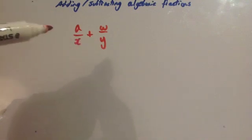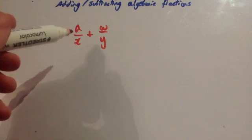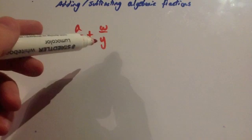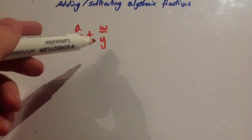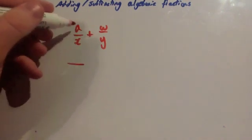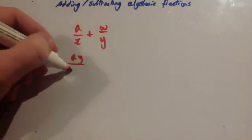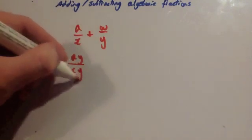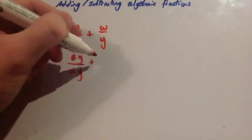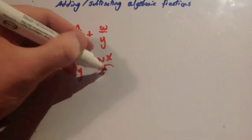So let's make them have the same denominator. If I times the top and bottom of this one by y, I would have xy on the bottom. And if I times the top and bottom of this one by x, I would have xy on the bottom of this one as well. So making xy the denominator of both: times the top and bottom of this one by y gives you ay over xy; times top and bottom of this one by x gives you wx over xy.